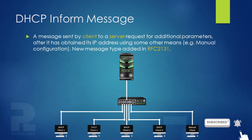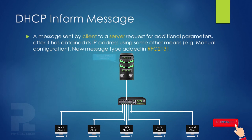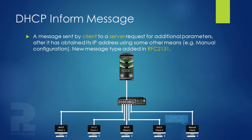A device that has obtained IP configuration through some other means — for example, through manual configuration — may send a DHCP Inform message to the DHCP server in order to obtain other network configuration information, such as the DNS server address, gateway IP address, and other local configuration parameters available in the DHCP address pool configuration.